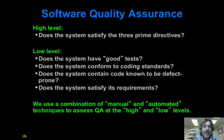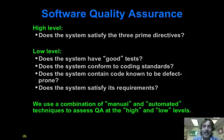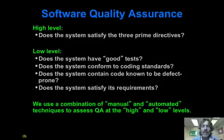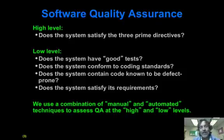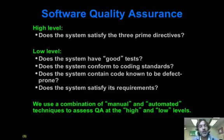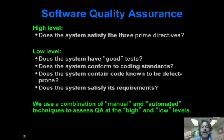At the highest level, what do we mean by Software Quality Assurance? At the high level, we're talking about the three prime directives: Does the system accomplish a useful task? Can someone download and install it, and can a developer enhance it? That's what we mean at the high level, but at the low level, how do we operationalize those things? There's a lot of little things you should be able to do in order to assure these prime directives, such as having decent tests and conforming to coding standards.